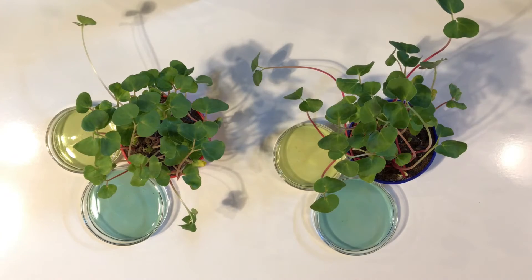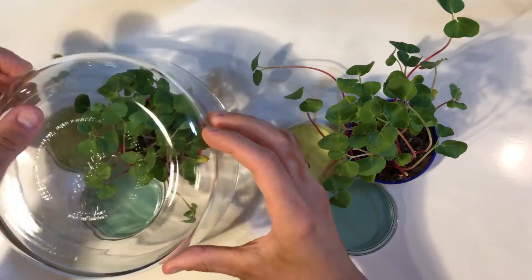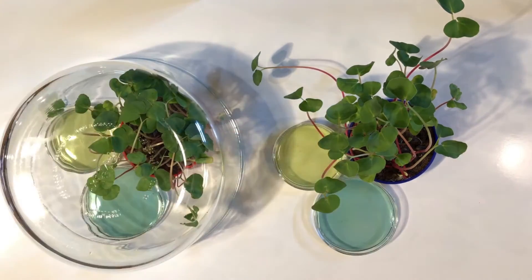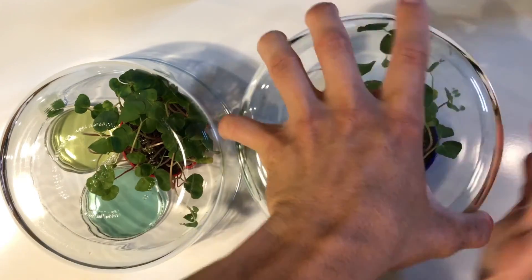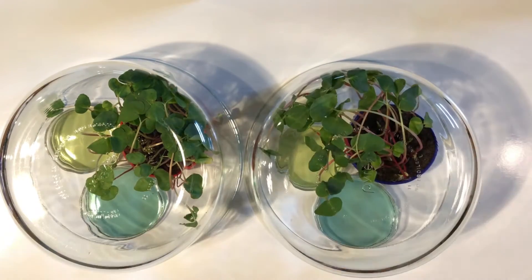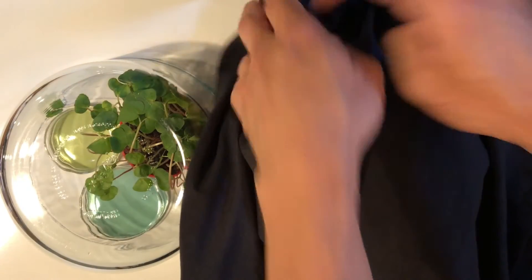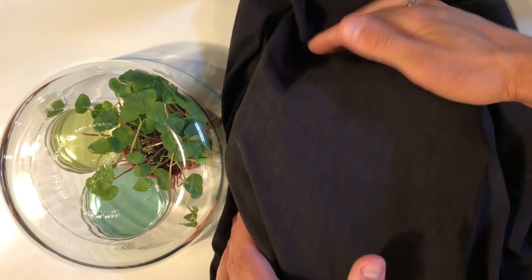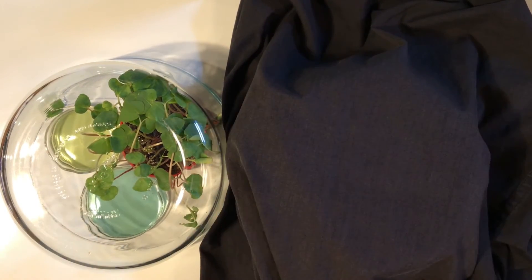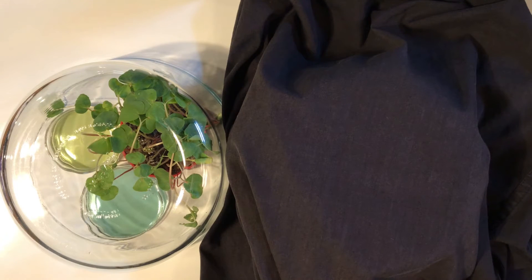The BTB is acting as our responding variable. Now let's think about our manipulated variable. We want to figure out what light does to the function of plants. So let's cover up one group of plants with a dark cloth, which will keep them in the dark. The other we will leave exposed to bright light. This way, the only thing that differs between the groups is the presence of light.